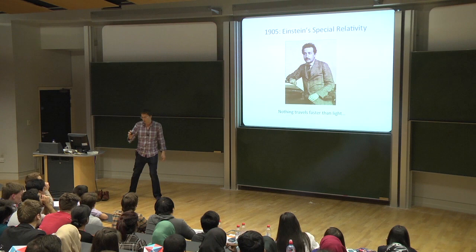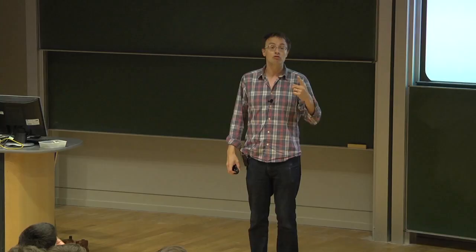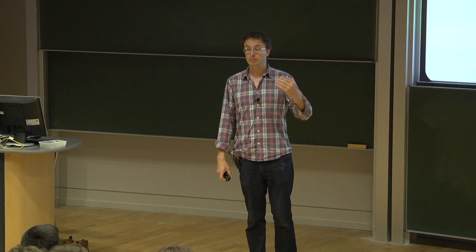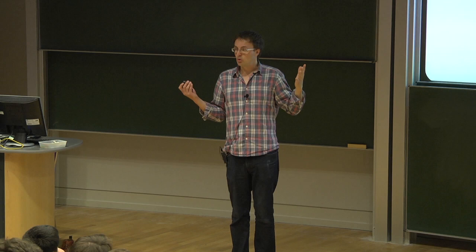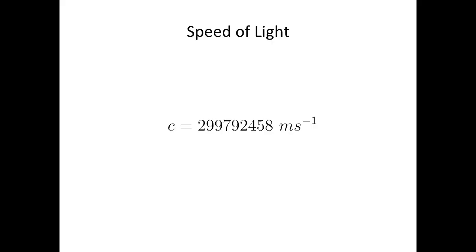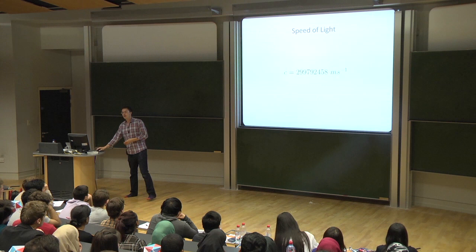Special doesn't mean fancy — it means specialised. The special theory of relativity is fairly restricted in what it can say about the world. It only works in very special situations and is later subsumed by the more general theory. The essence of it is straightforward: nothing can ever travel faster than the speed of light. There's a speed limit in the universe and the laws of physics conspire to make sure nothing ever exceeds it.